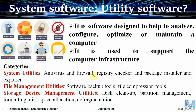Firewall is software used to filter data coming from the internet or any network. Registry checker is software used to maintain the database of an operating system. Package installer and file explorer are also examples of system utilities.